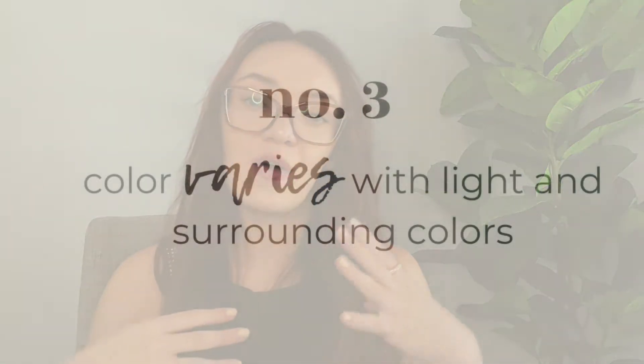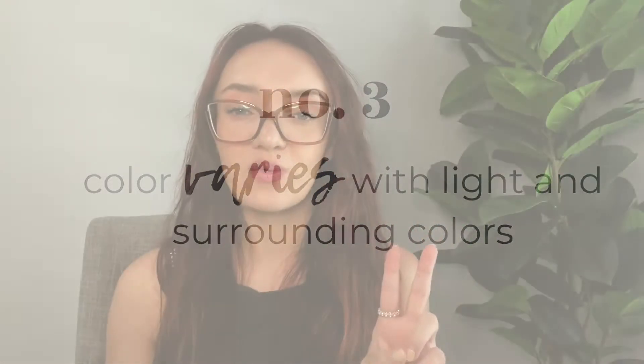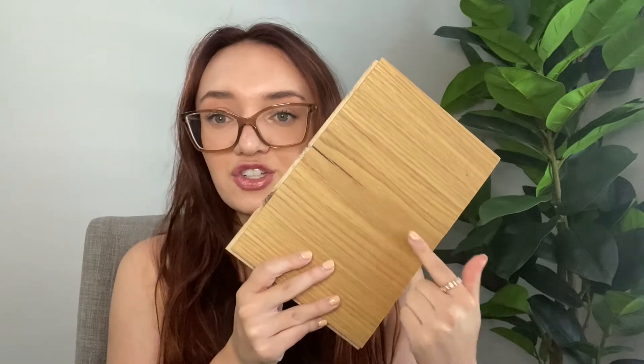Now I want to talk about how colors can vary in a space. There are two main reasons a color will look different: one is from light, and the second is from what other colors it's paired with. Let's talk about light first. I'm going to show you how the color of this wood sample changes with different light — I'm filming with a ring light that can change color temperatures.